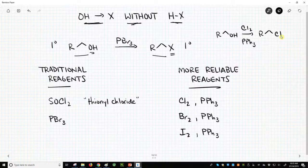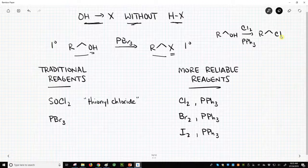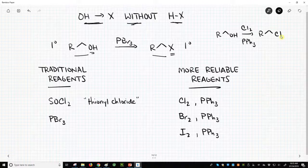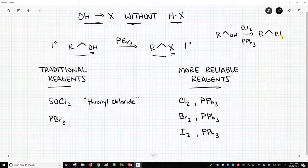You have an alcohol. You want to do an SN1 or SN2 or an E1 or E2 on that alcohol, but alcohols are poor leaving groups. So you convert the alcohol into a good leaving group so you can do your substitution or elimination reaction. These are reagents that allow you to convert an alcohol into a halide regardless of the substitution.